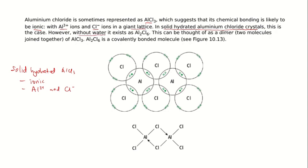However, without water, it exists as Al2Cl6. This can be thought of as a dimer. That means two molecules of aluminium chloride join together.